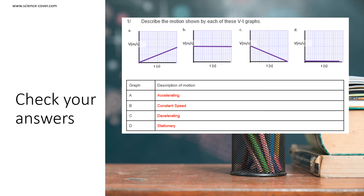Let's check our answers. Describe the motion shown by each of these VT graphs. A is showing an acceleration. B is showing a constant speed. C is showing a deceleration. And D is showing a stationary object.